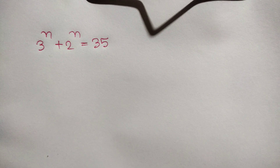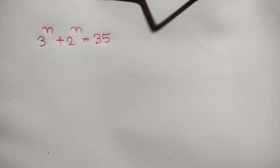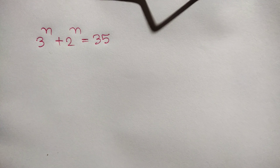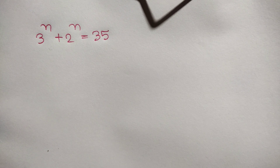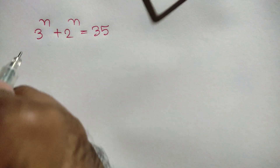Hi everyone. In this video I am going to show how to find the value of n where 3 to the power n plus 2 to the power n is equal to 35, where n is a positive integer.